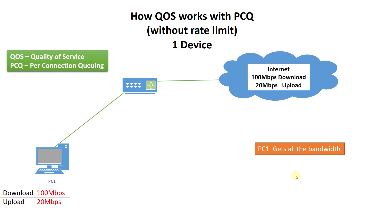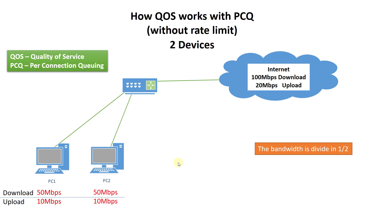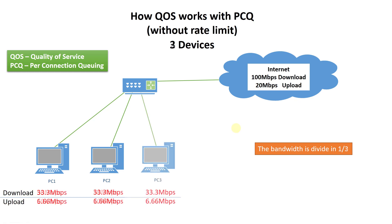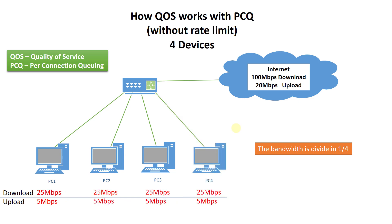In this diagram, when one device is connected this device will get the full 100 down and the 20 up. But if another PC comes online and starts to browse, with PCQ it will ensure that this PC will be guaranteed half of the available bandwidth. And if we add another device the bandwidth will be divided by 3, and if a 4th device comes on the total bandwidth will be divided by 4. So with 4 devices each device will get 25 megabits download and 5 megabits upload.